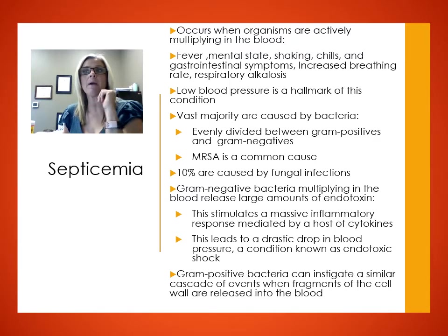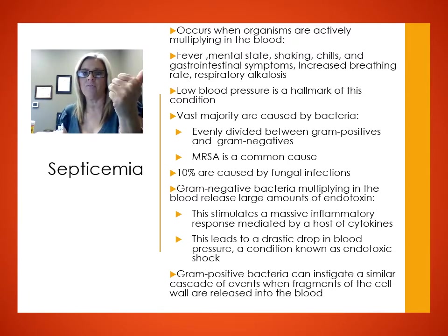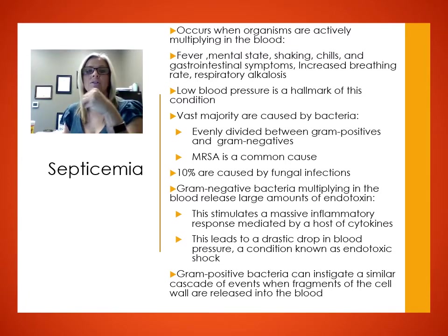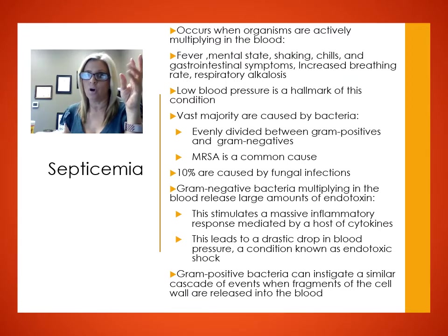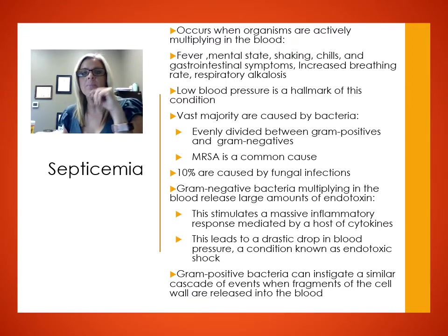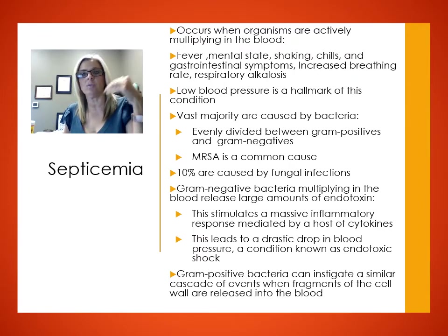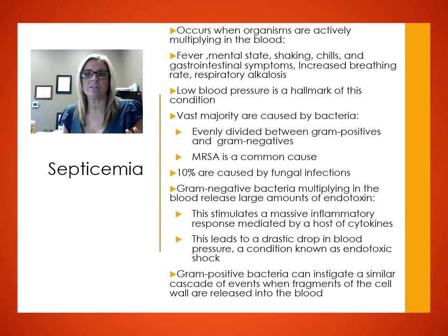Septicemia is when microorganisms are multiplying in the blood — not just present, but actively multiplying. Symptoms include fever, altered mental status, chills, GI symptoms, and increased breathing rate, which can cause respiratory alkalosis. The hallmark sign is low blood pressure, caused by the inflammatory response to infectious agents in the bloodstream, leading to fluid loss from vasculature and a drop in blood pressure. If blood pressure drops too low, the patient goes into shock and can die.